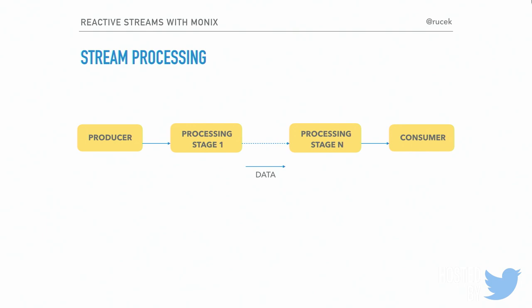The way this problem is solved in reactive streams is using something called back pressure. Back pressure is a way for a slower consumer to tell the producer how much data it can accept. You can imagine back pressure as data flowing in the opposite direction, with the consumer requesting data from the producer. Importantly, back pressure in reactive streams is asynchronous — we want to be as asynchronous and non-blocking as possible, so that unused resources are returned to a pool for reuse.